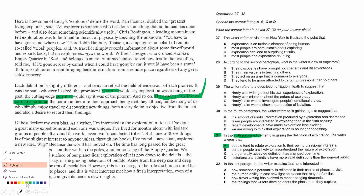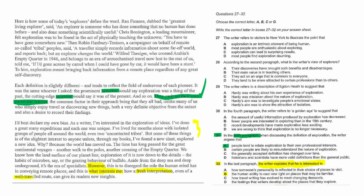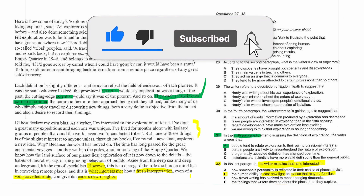Question 32 refers to the last paragraph: 'the writer explains that he is interested in...' Find what specifically interests him. Look for contrasting connectors in the paragraph. After the connector, we find a sentence about 'what interests me.' The answer is in the last sentence — read it to find the key idea. The correct answer is B.